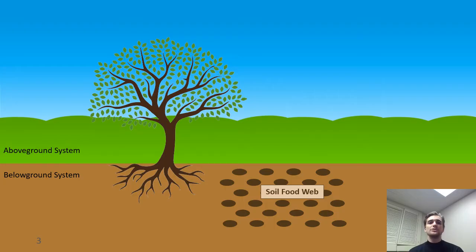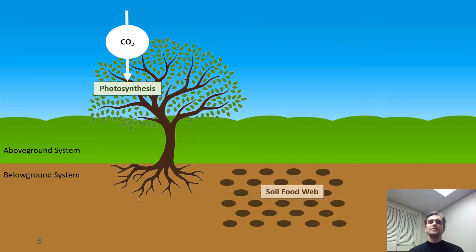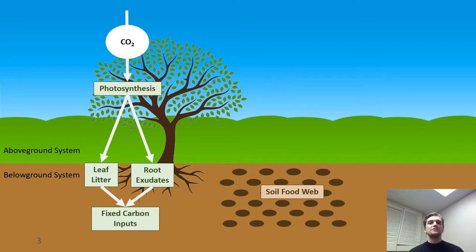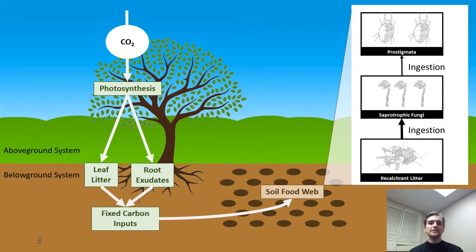Carbon sequestration describes the process by which carbon dioxide is removed from the atmosphere and stored in the soils. This function is facilitated by photosynthesis and above-ground vegetation. Photosynthesis produces fixed carbon inputs to the soil food web in the form of leaf litter and root exudates. This fixed carbon enters the soil food web when it is consumed by primary decomposers like bacteria and fungi. As individuals in the soil food web die, they contribute to the detrital pool.